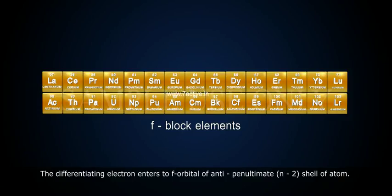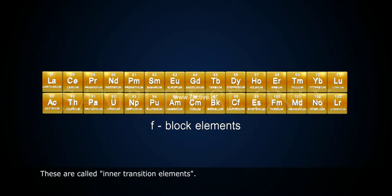The differentiating electron enters the f-orbital of antepenultimate (n-2) shell of the atom. These are called inner transition elements.